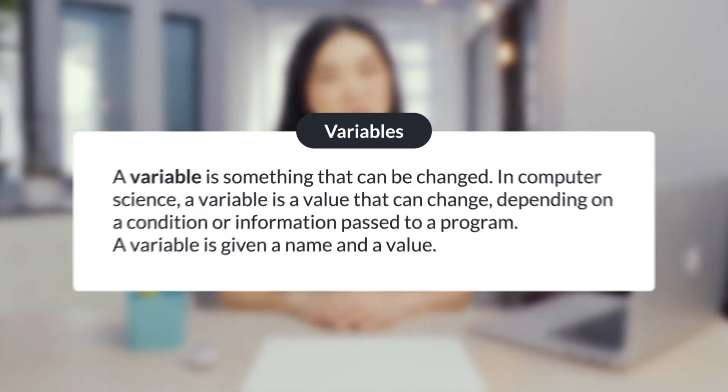A variable is something that can be changed. In computer science, a variable is a value that can change depending on a condition or information passed to a program. A variable is given a name and a value.